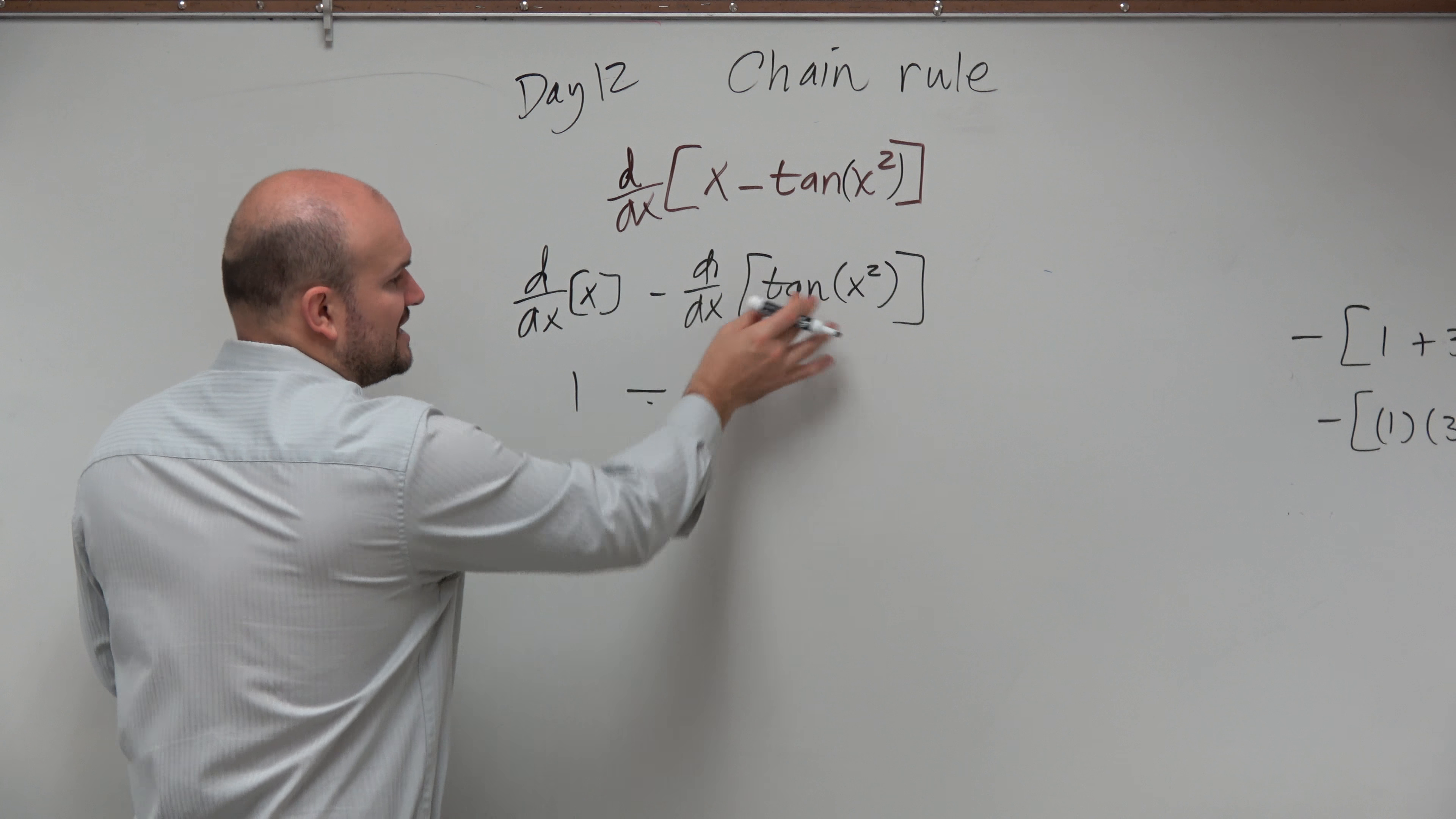Here, we notice though, that we have the chain rule, correct? Minus, so again, I'm not going to go through the f(g(x)). We know we have to take the derivative of the outside function, or the parent function, which in this case is going to be tangent.